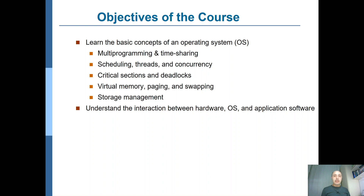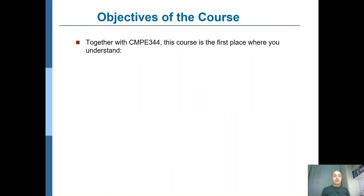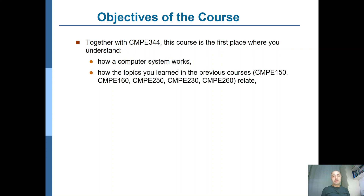At the end of the course, you will be able to understand the interaction between the hardware, the operating system, and the application software running on that hardware and operating system. Together with the other course, CMP344, this course is the first place where you understand how a computer system works in general.